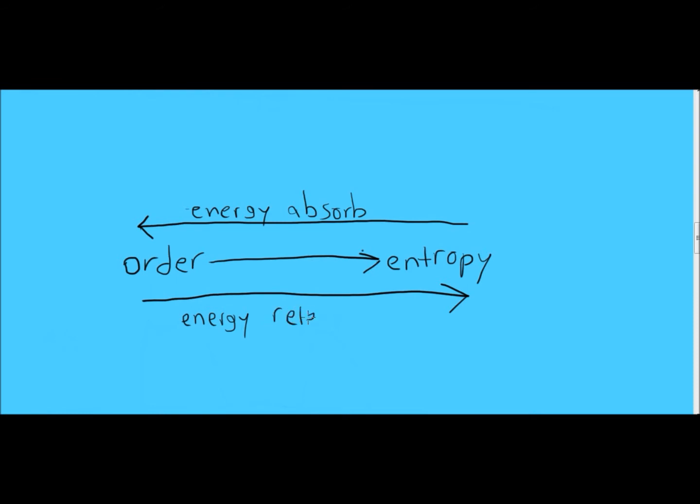So generally energy is released and a system becomes less complex and that's called entropy. The opposite side of the equation is when a system is absorbing energy and there's more order in the system.